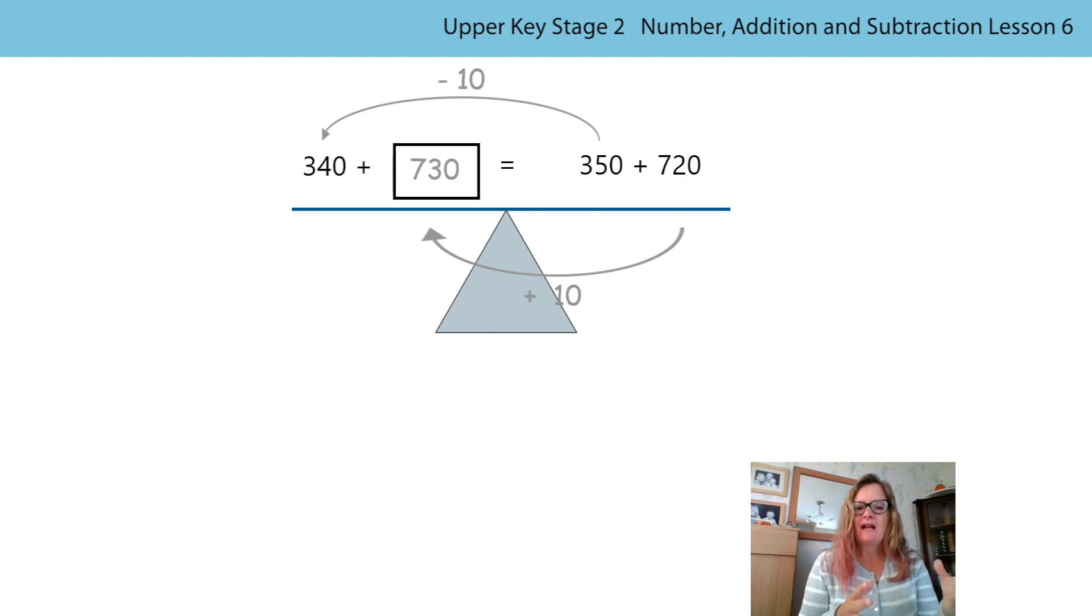So without doing much in the way of calculating, just spotting the relationship between the numbers, spotting that 340 is related to 350 by 10. We can redistribute and subtract 10 from one addend and then we need to add 10 to the other addend.